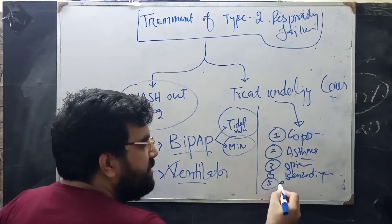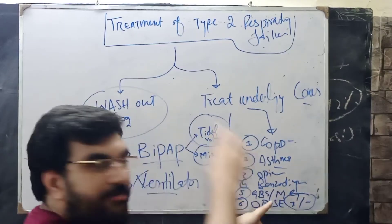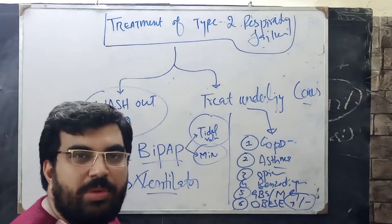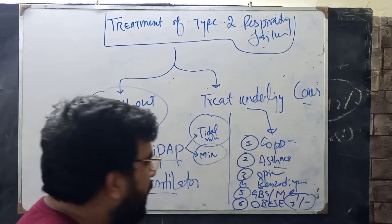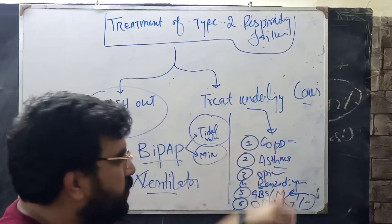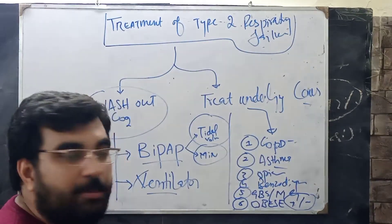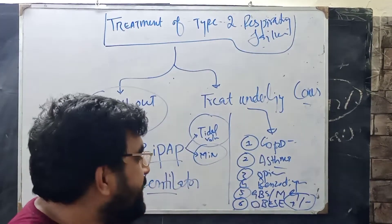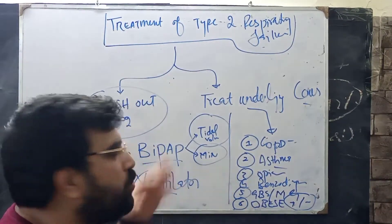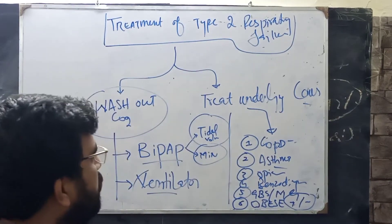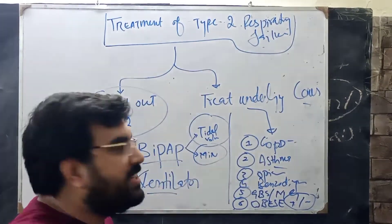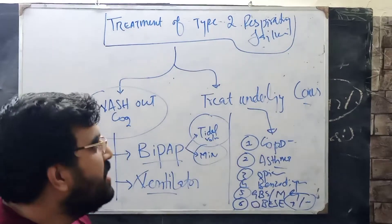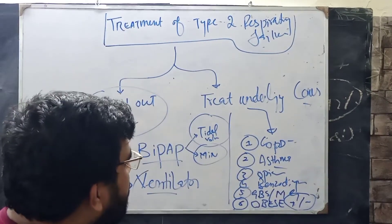If it is GBS or myasthenia gravis, treat that along with CO2 washout. If it is obesity such as obstructive sleep apnea or obesity hypoventilation syndrome, treat that. If it is kyphoscoliosis, treat that alongside CO2 washout. However, if the cause is untreatable — for example, a person with kyphoscoliosis or chest deformity not fit for surgery — you use BiPAP lifelong. If the cause is correctable, correct it; if not, BiPAP becomes the long-term treatment.